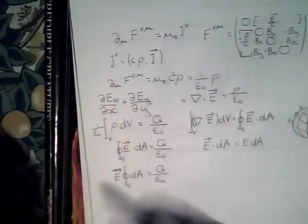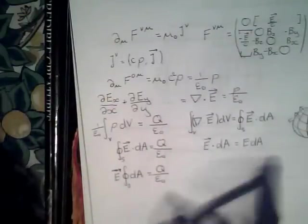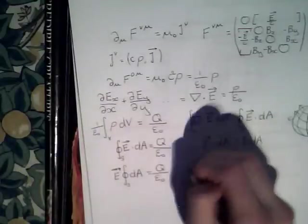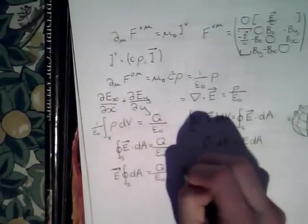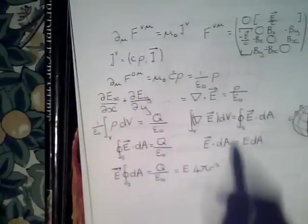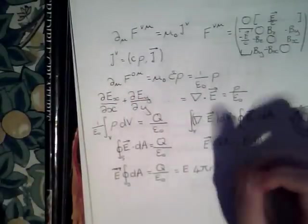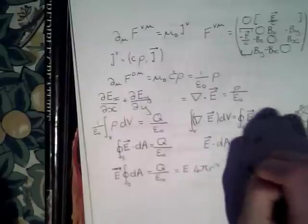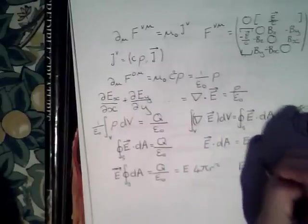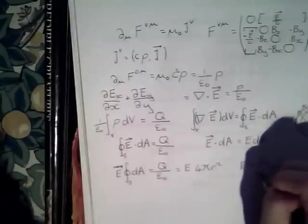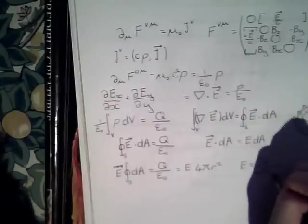What's the surface integral of dA, of a sphere of radius r? Well, it's just 4 pi r squared. So now we can rearrange this to get E equals q over 4 pi epsilon naught r squared. Okay.